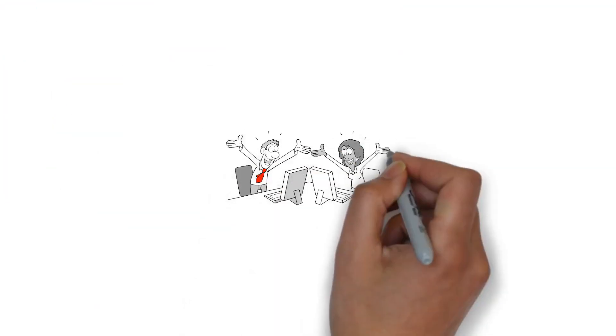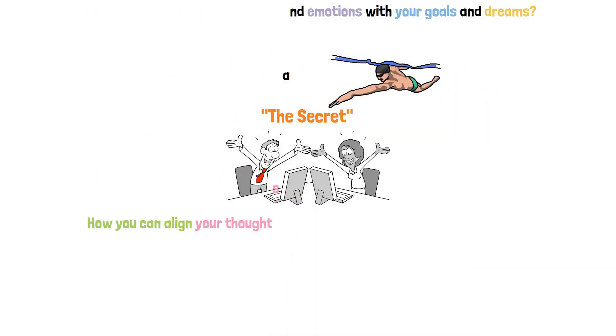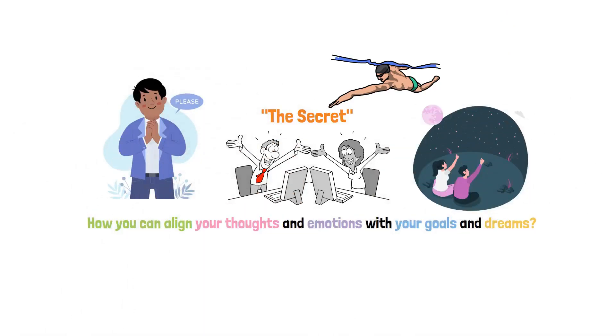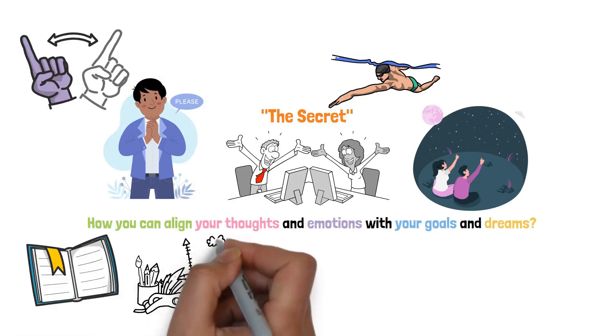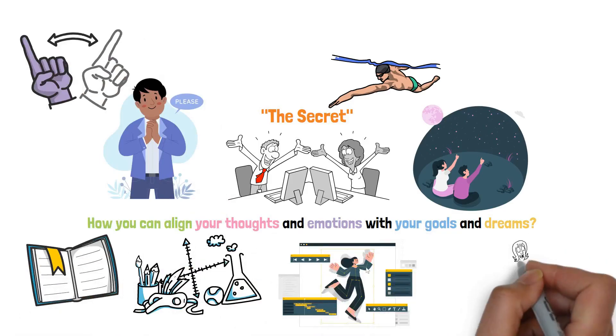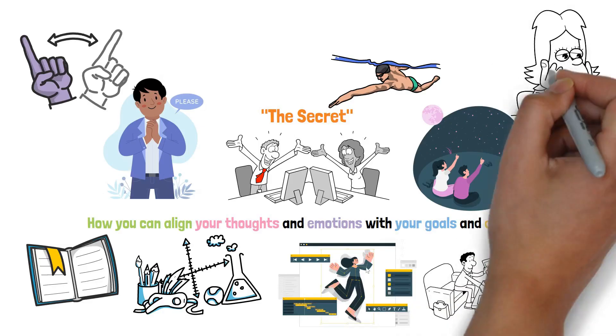It's like ordering your dreams through the universe's very own Amazon Prime account. Just a few clicks, and voila, your desires are on their way. But here's where it gets exciting. The Secret dives deep into how you can align your thoughts and emotions with your goals and dreams. It's not about simply wishing upon a shooting star and hoping for the best.